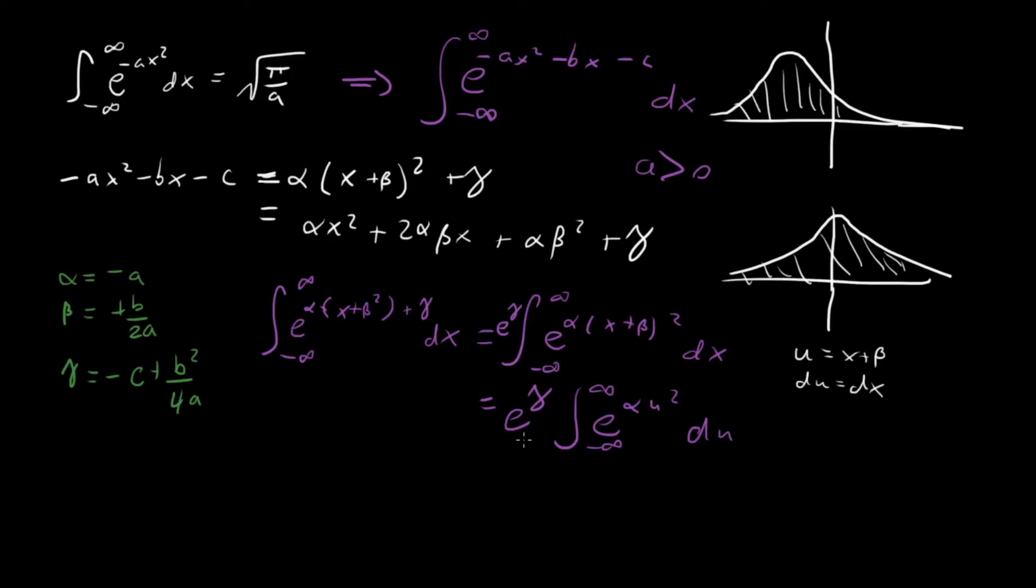So we've done it. We've gotten our integral into a form that we know how to solve times a constant that we know. And so that means that we can write out this whole thing. And I'll write it out down here. And what do we have? We have that our integral is e to the minus ax squared minus bx minus c dx. And what's this going to be equal to? Well, e to the gamma. So what's e to the gamma? It's going to be e to the b squared over 4a minus c, times this integral right here. And this integral is exactly this guy up here, square root pi over a.